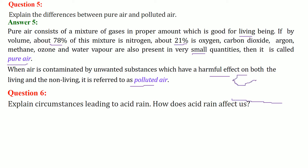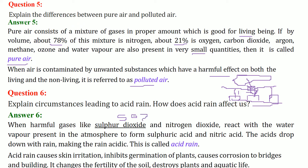Explain the circumstances leading to acid rain and how acid rain affects us. From the ground, industries and chimneys emit harmful gases from burning leaves, garbage, and other pollutants. These gases rise into the atmosphere and form a blanket. When it rains, water vapors combine with harmful gases like sulfur dioxide (SO₂) and nitrogen dioxide, forming sulfuric acid and nitric acid, which fall as acid rain. Acid rain can cause skin irritation, inhibit germination of plants, cause corrosion to bridges and buildings, affect soil fertility, and harm aquatic life.